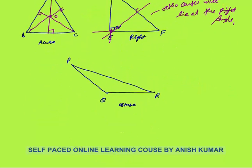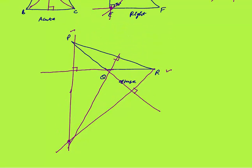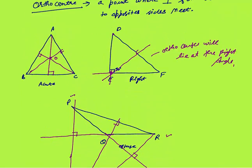Now, what about an obtuse angle triangle? You draw perpendiculars from vertices to opposite sides. From P to opposite side QR — extend side PQ — this gives a perpendicular from P. Similarly, draw perpendicular from R to PQ by extending PQ, and from Q to PR. These three perpendiculars meet outside the triangle. Very important: in an obtuse angle triangle, the orthocenter lies outside the triangle.